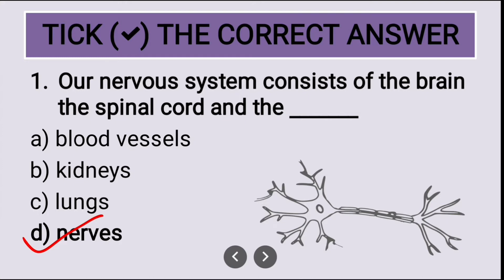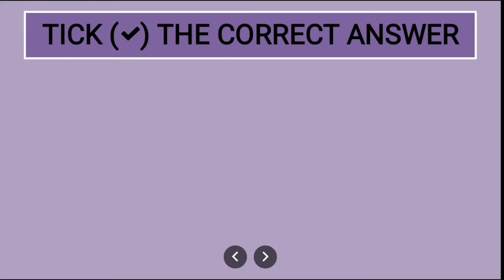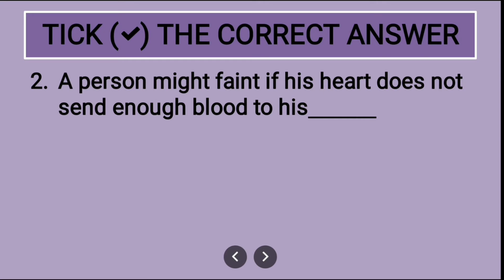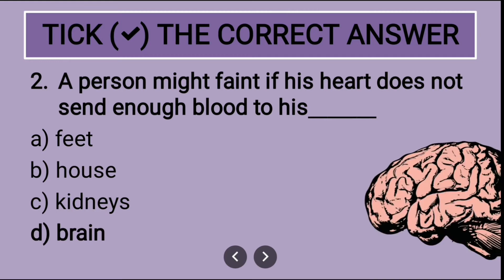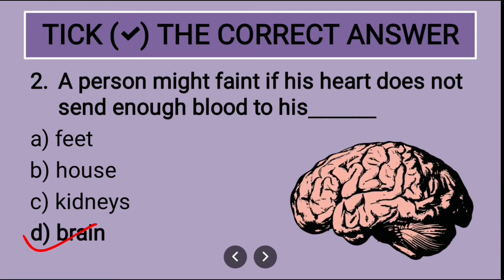Next question: a person might faint if his heart does not send enough blood to his blank. The options are feet, house, kidneys, brain. The correct option is brain. If brain doesn't receive enough blood, a person might faint.